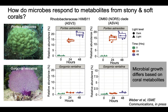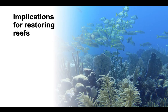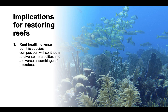I promised a couple of implications for restoring reefs. I have two take-home messages. The first is that this is critical for reef health: if you have a diverse benthic species assemblage, you're going to have a diverse pool of metabolites, and that's going to support microbial diversity, contributing to a healthy, resilient reef that will have a lot less disease.